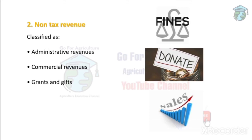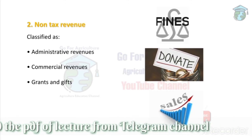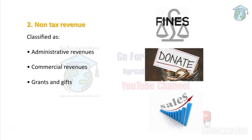The classification of non-tax revenue includes administrative revenues, commercial revenues, and grants and gifts. Administrative revenues are rules imposed by the government — like fines paid when you break the rules. Fees are also administrative revenues: to get a passport or a license, you must pay the government some money.